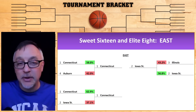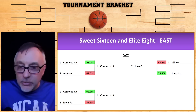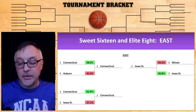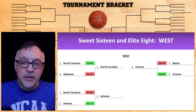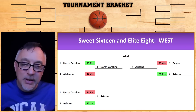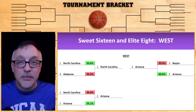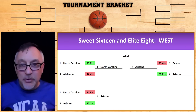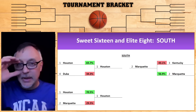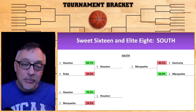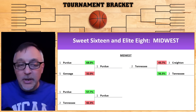Here is the Sweet 16 and Elite Eight by region. Connecticut gets past Auburn, Iowa State gets past Illinois, and in the East region championship game, Connecticut gets by Iowa State — so Connecticut is going to the Final Four. In the West, North Carolina and Arizona win their games, and Arizona is 55% to 45% over North Carolina, so the two seed goes to the Final Four instead of the one seed. In the South, Houston beats Marquette to go to the Final Four. And in the Midwest, Purdue beats Tennessee, with Purdue advancing.